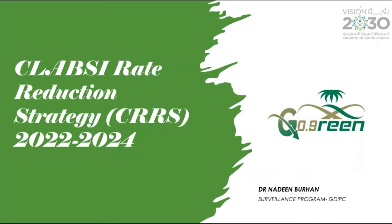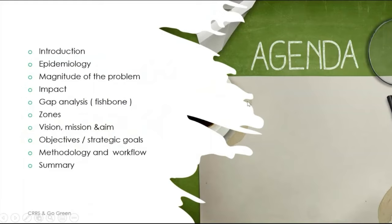While we are highlighting this 0.9, our today's agenda is going to be an introduction — most of the information already mentioned by the previous speakers. We will talk about the epidemiology of CLABSI, magnitude of the problem, impact of CLABSI events, gap analysis or fishbone of the strategy, the rate, different zones, vision, mission, aim of the CRRS strategy, objectives and strategic goal, methodology and workflow, and we will end with a summary.